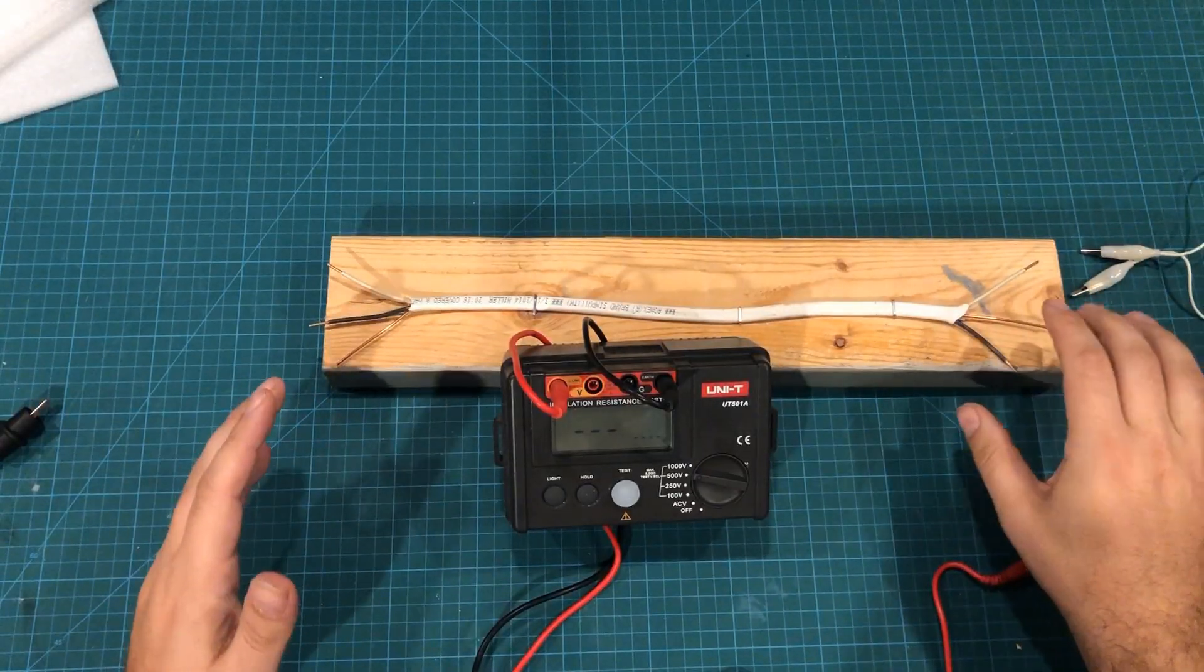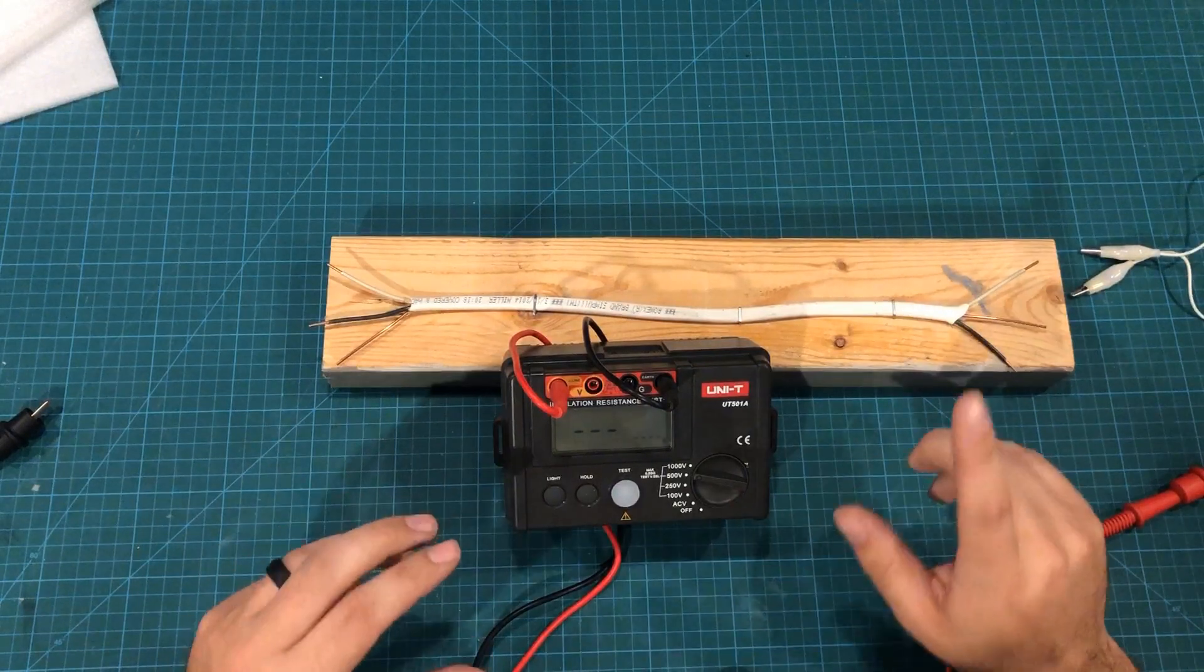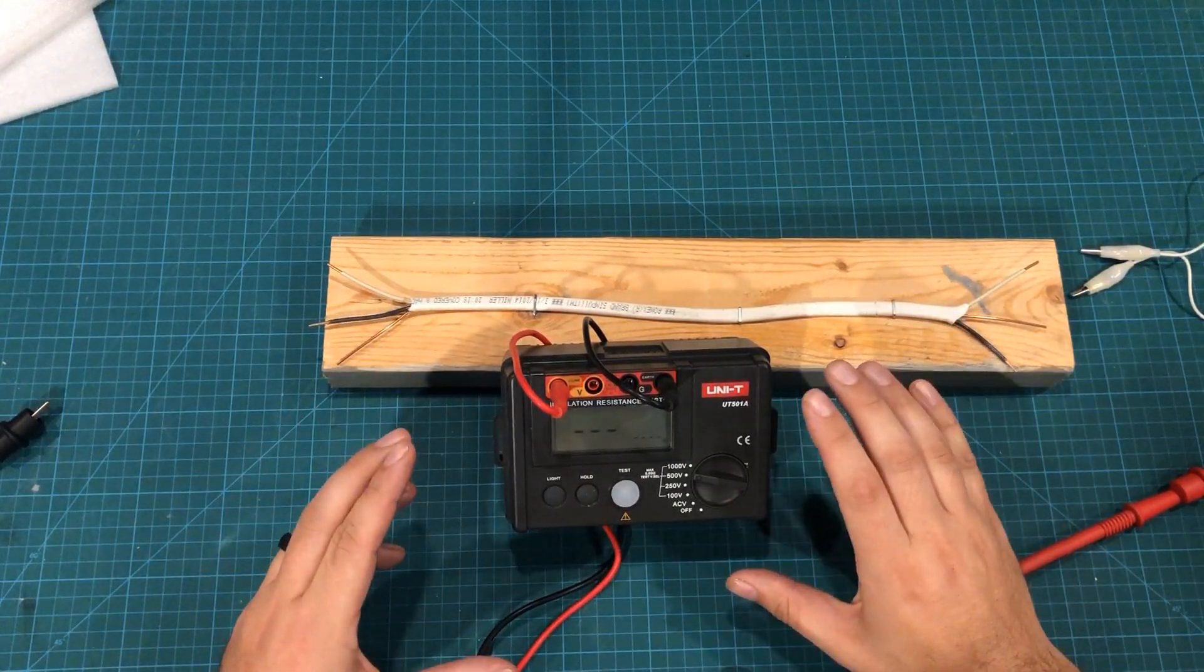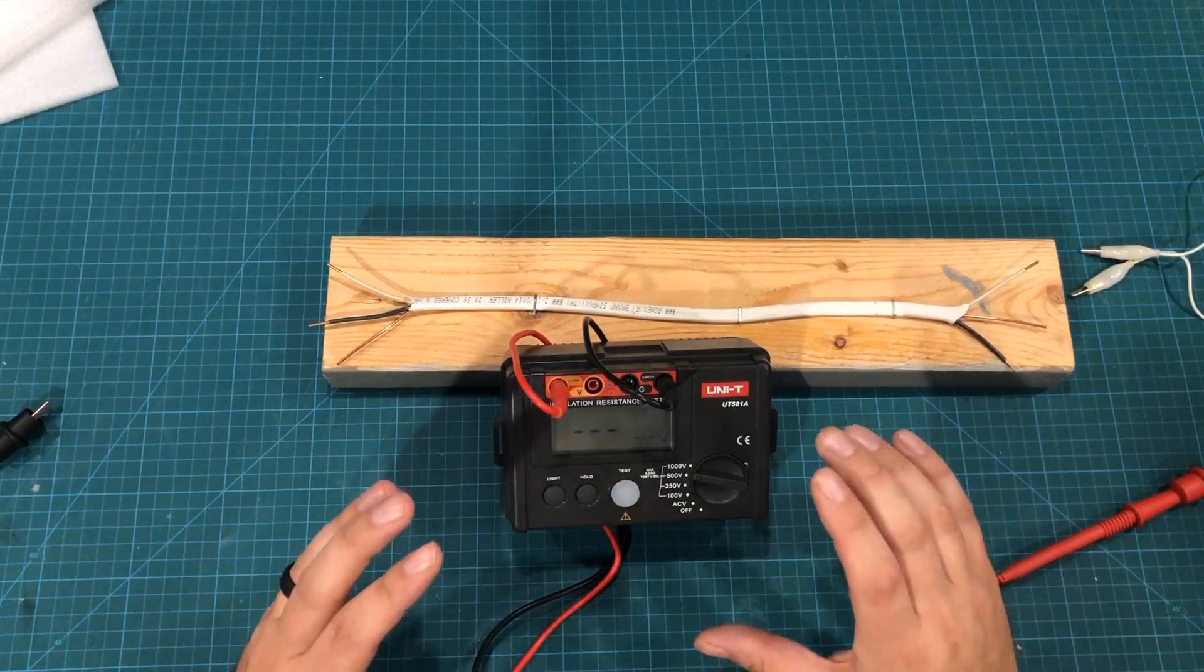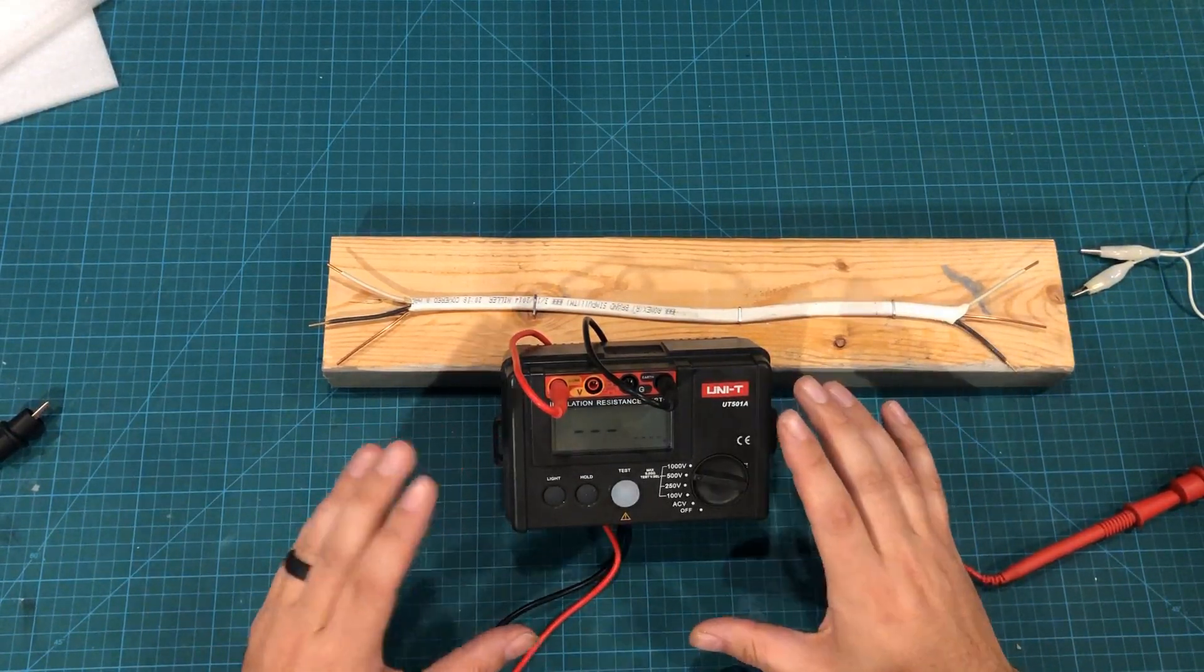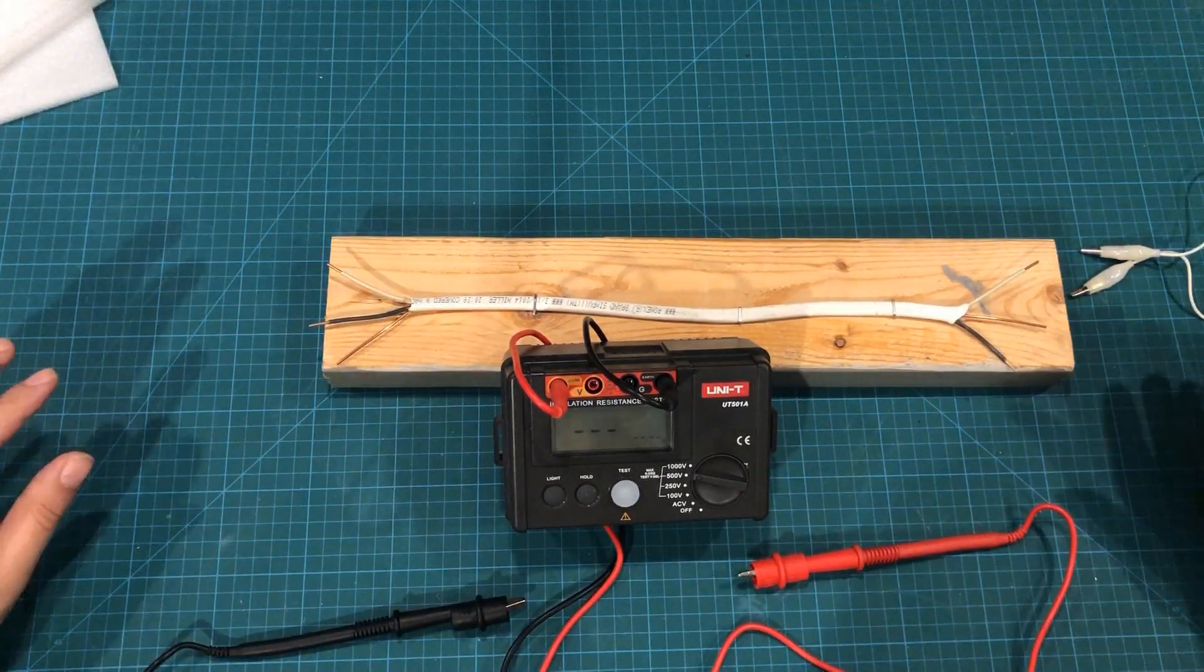Now that we've done the familiar continuity testing, we're going to look at the Unity UT501A. We need to do the same know your meter thing. This may seem dumb, but you want to understand what happens if there's no connection and what happens if there's a perfect connection so you know what you're reading.